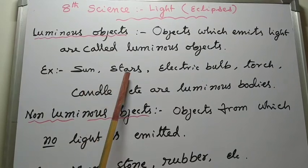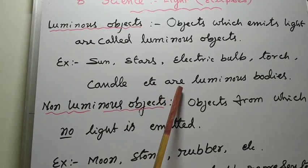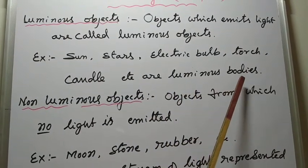Sun, stars, electric bulb, torch, candle, etc. are called luminous bodies.